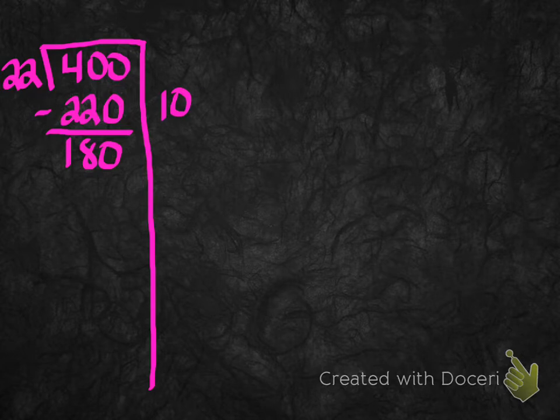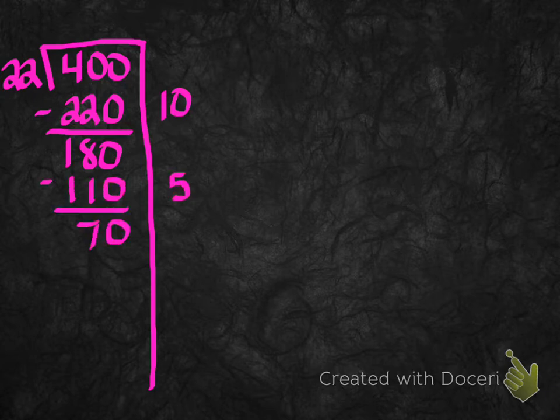So I picked 10 for my first number there on my right as part of my answer. Remember, a partial quotient is part of the answer. We keep doing parts of it until we finally get done and then we add all those parts together and then we have the quotient. So I go ahead and multiply my 10 times my 22. That's how I got my 220. I do my subtraction. I have 180. I can still take several 22's from that 180. So I'm going to pick 5 this time. And 5 times 22 is going to give me 110. I do my subtraction. I get 70.